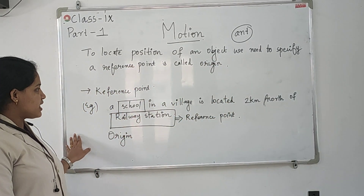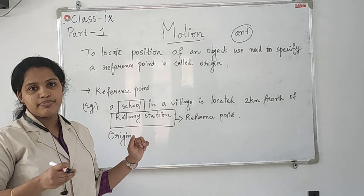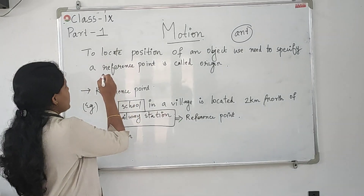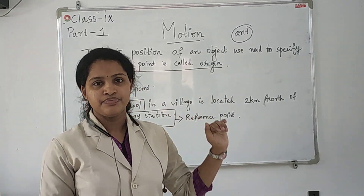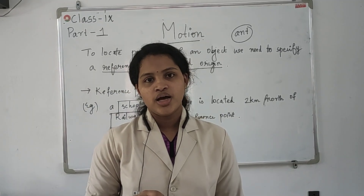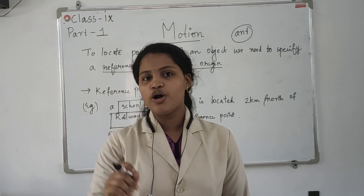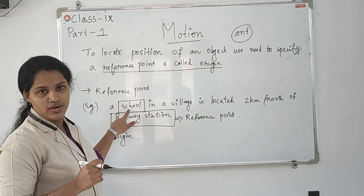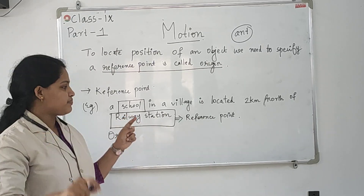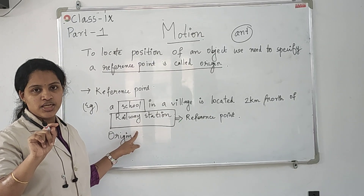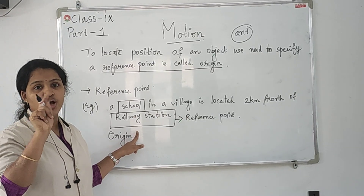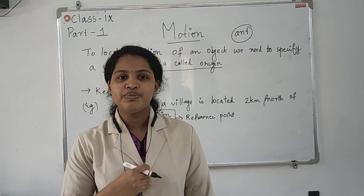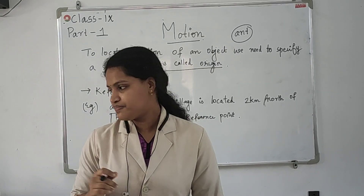So today we discussed the term motion, different kinds of motion, and the main important point — reference point or origin. I hope you understood the class. Your homework is to locate your house using a reference point — that is, describe the position of your house. Please do it. We can continue in the next class. Thank you.